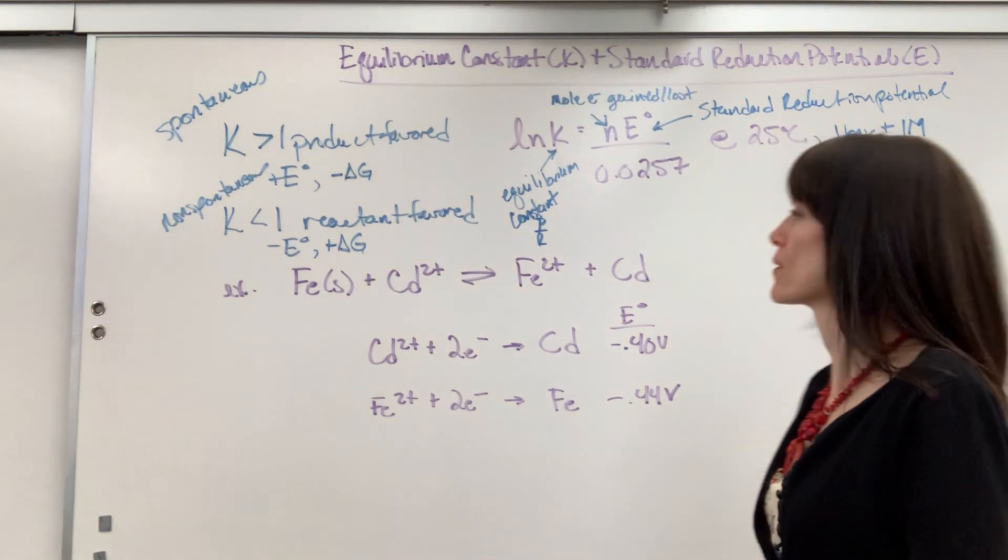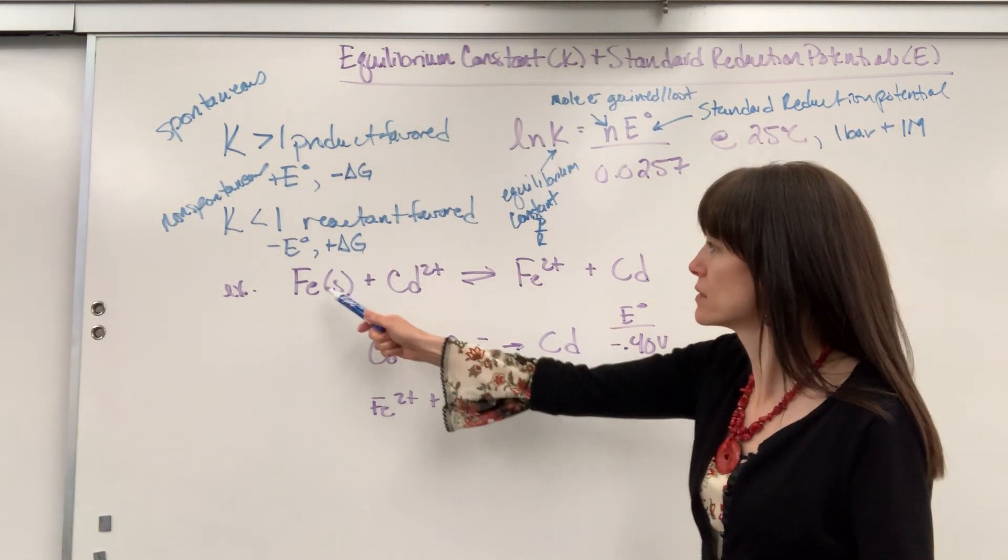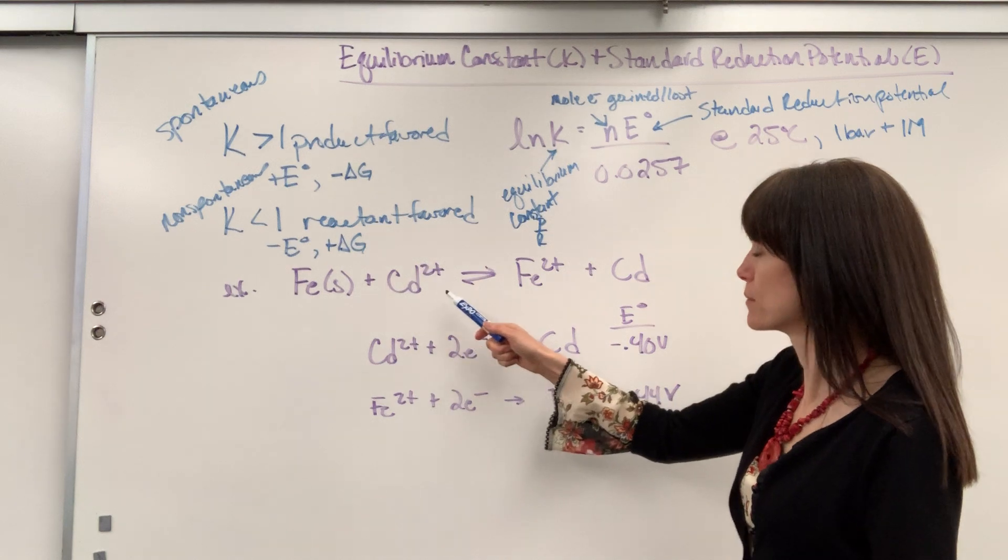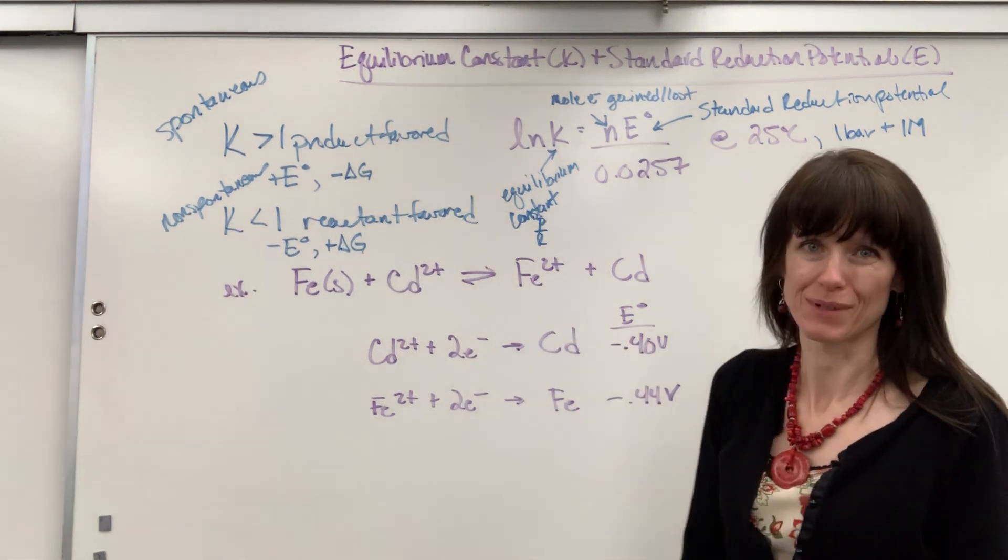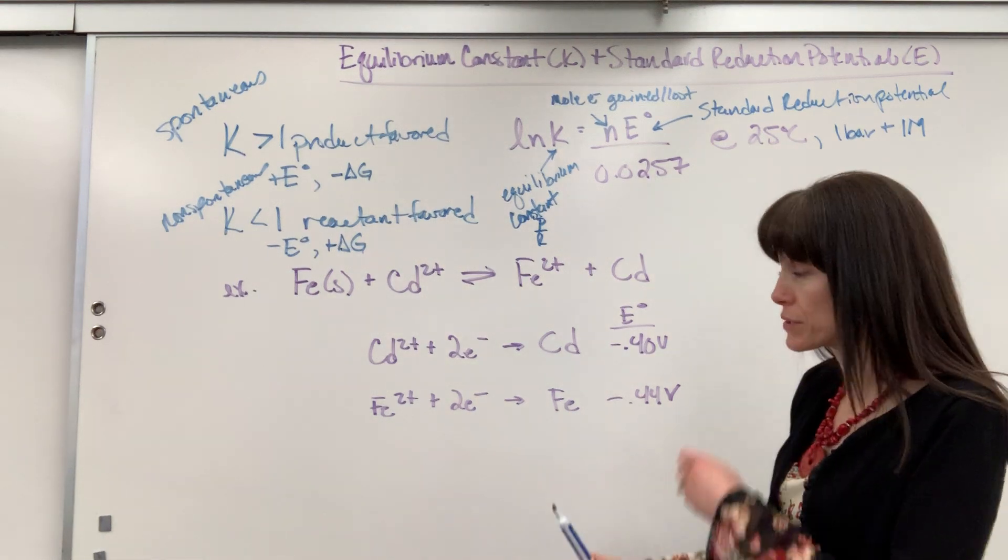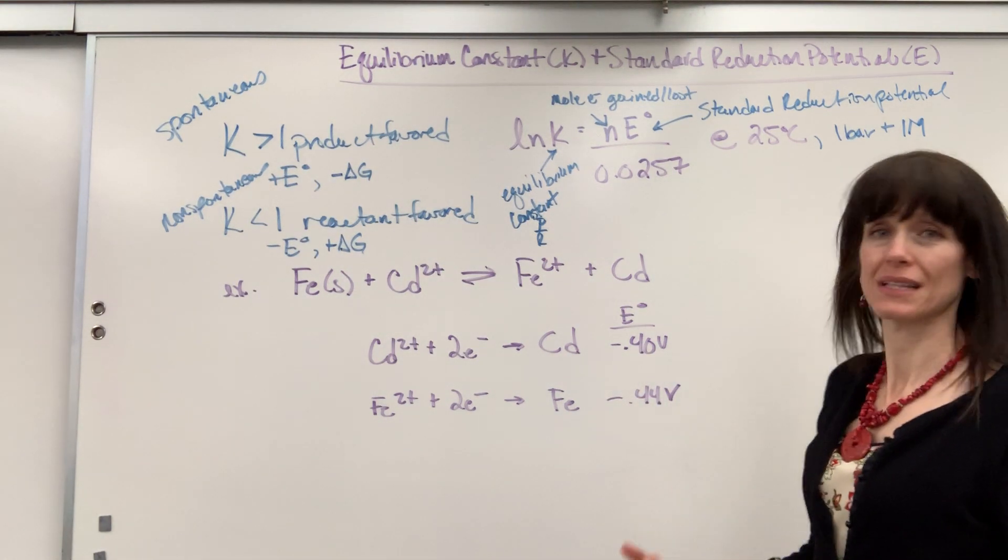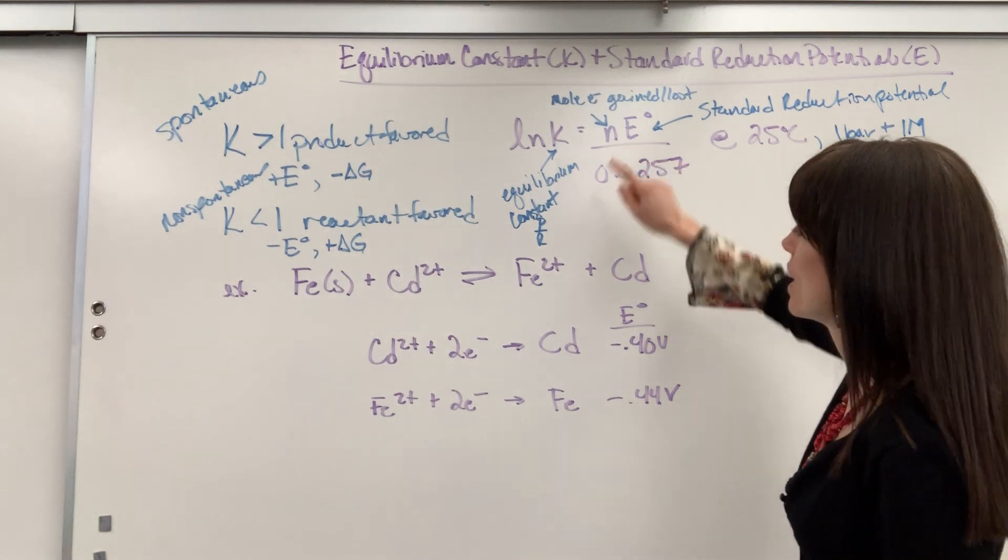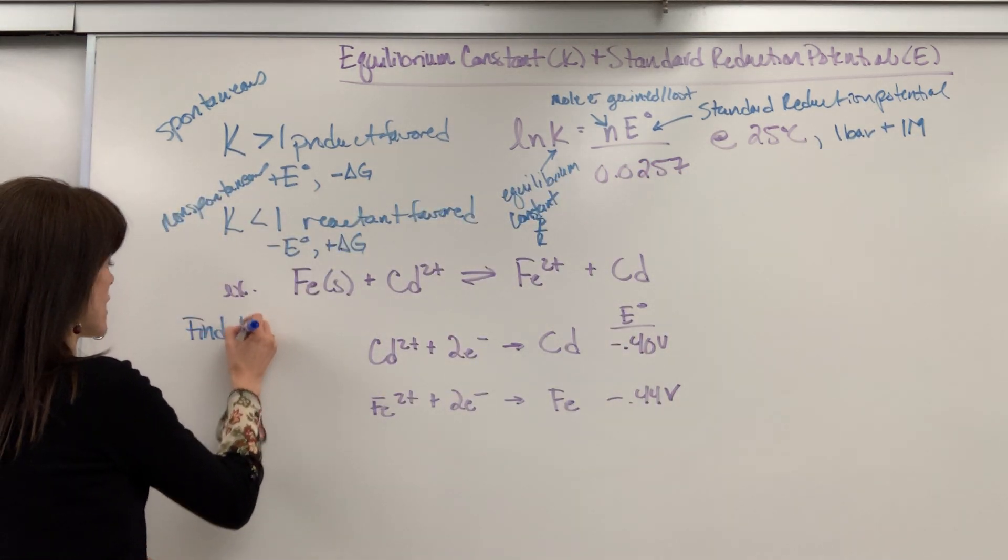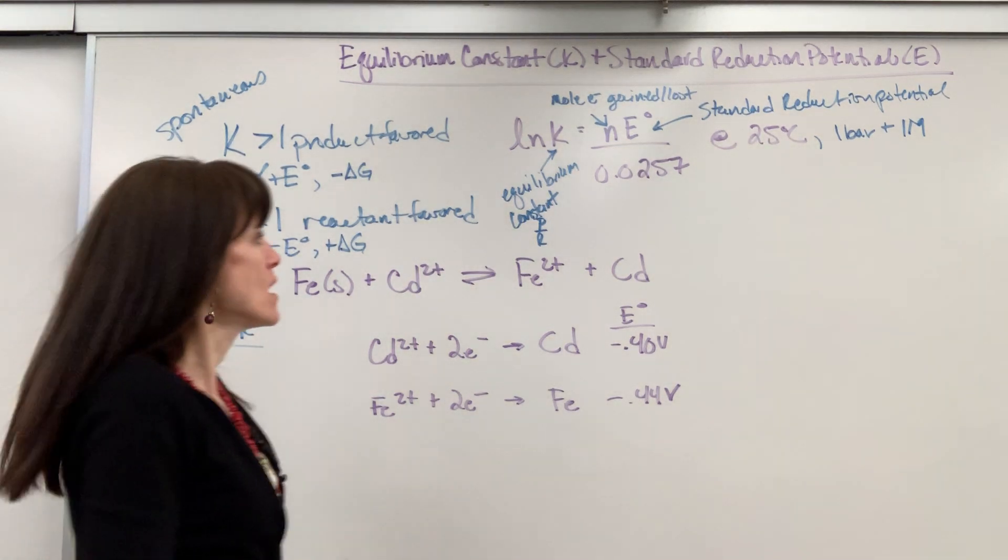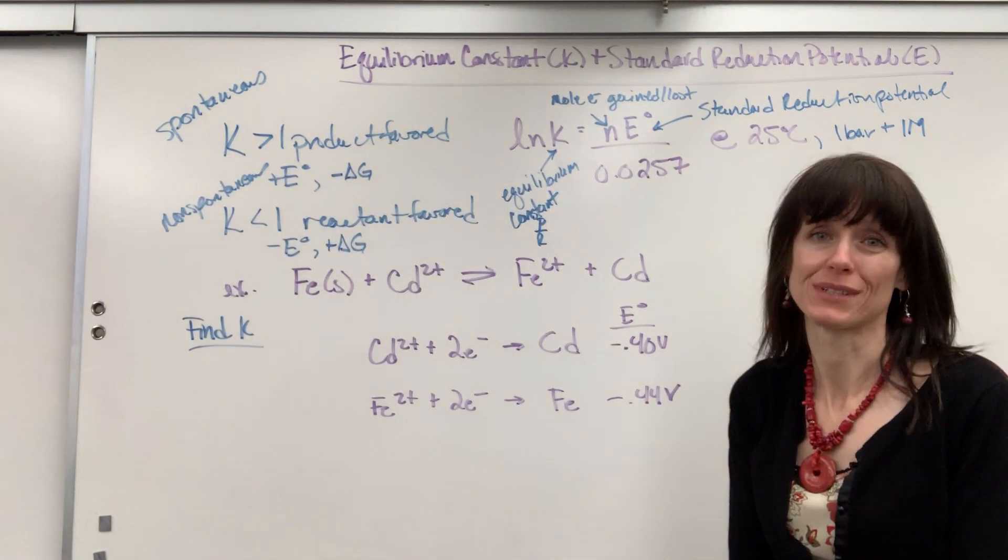I have an example for you. We are going to have iron solid react with the cadmium ion to produce the iron ion and the cadmium solid. I like to have the two half reactions. First thing we've got to do is find E° because I want to find K. We want to determine K, which means I need that standard reduction potential.